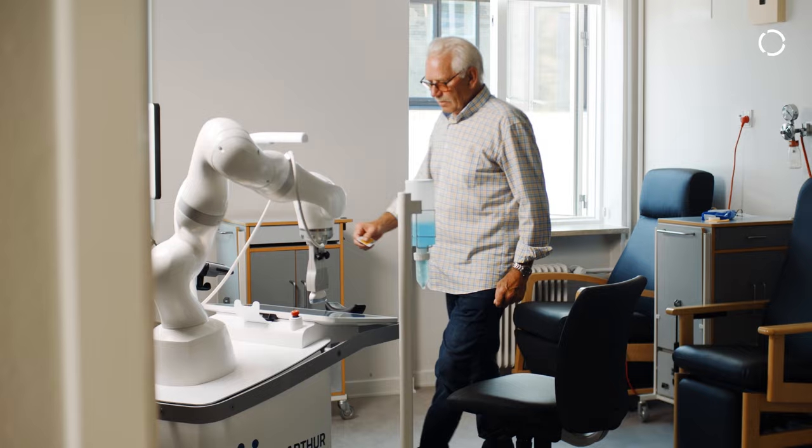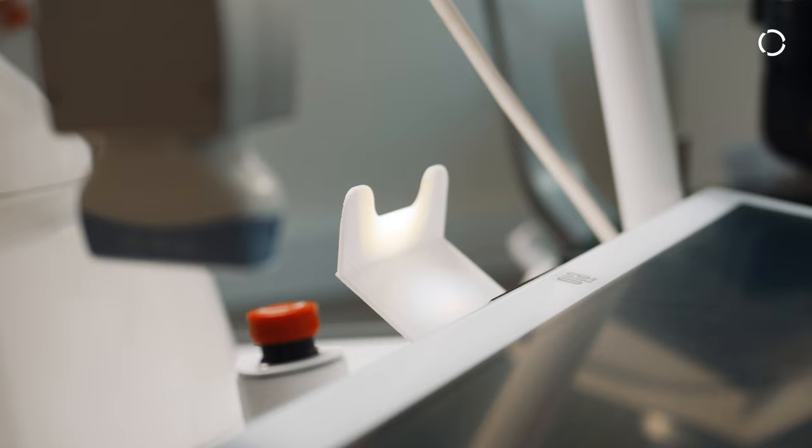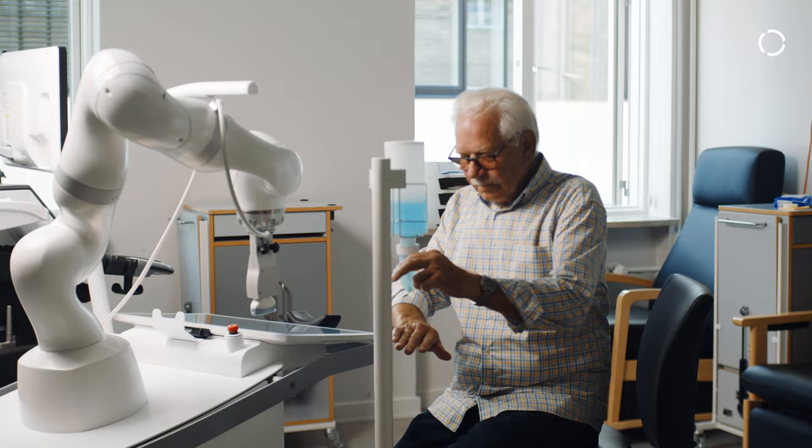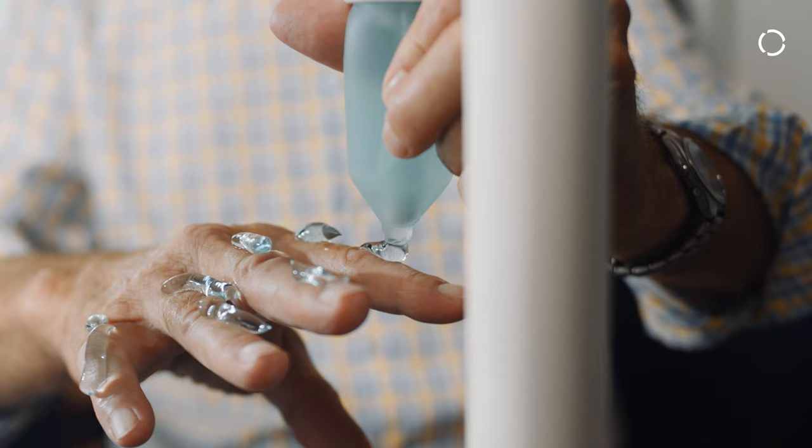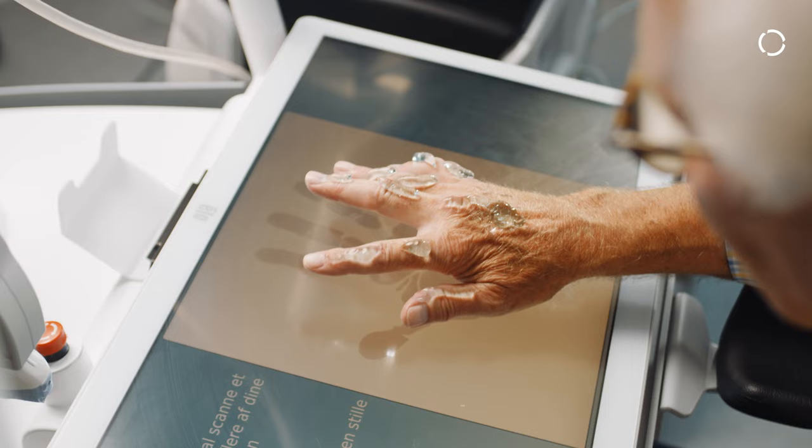The process of being scanned by Arthur, the fully-automatic scanning robot, is as follows. Patients identify themselves with a unique ID. First, they're asked to remove jewelry and are told how to apply ultrasound gel on the joints. Then they place their hand on Arthur's touch screen.